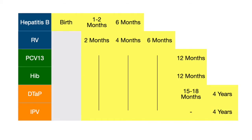IPV is your polio vaccine. We don't see as much polio anymore, thankfully, mainly due to vaccination. It's a potentially crippling and deadly disease that can lead to paralysis if the virus invades the brain and spinal cord. This vaccine is given at two, four, and six months of age and then at four years of age.